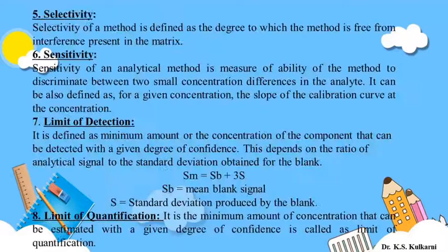The next definition is selectivity. Before starting this, I would like to say that all these terms we are learning are in the context of chemical analysis and analytical chemistry — that means to find out the quality and quantity of samples we are applying different methods of chemical analysis. These different terms explain the characteristics of the methods. We have already discussed four properties and now we will see the fifth property of the method that we apply in analysis.